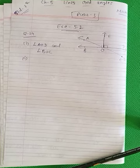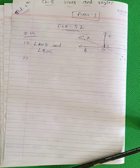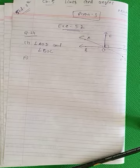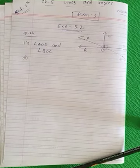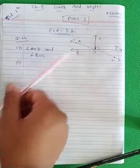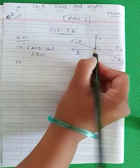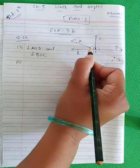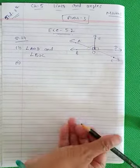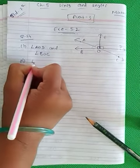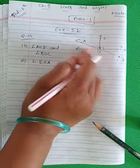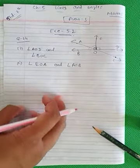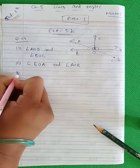Same way, second number: adjacent complementary angles. Complementary bhi hone chahiye aur baju-baju mein bhi hone chahiye. Complementary means the addition of 90 degrees. So you can say: angle AOB and angle AOE, also written as angle EOA.